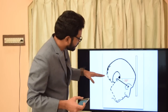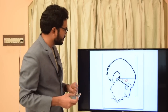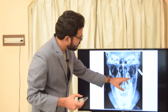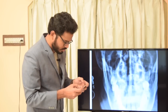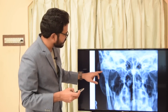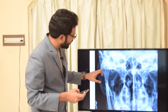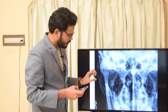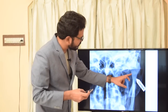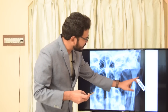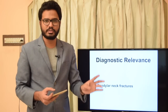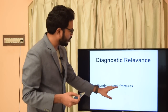In reverse Towns projection, the central beam has to be perpendicular to the film and directed towards the occipital bone. This radiograph clearly shows the condyle, and most importantly the subcondylar part is very clear. This projection is mainly used for evaluating subcondylar fractures.